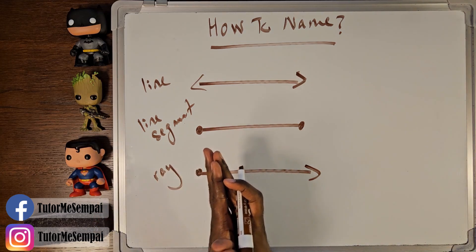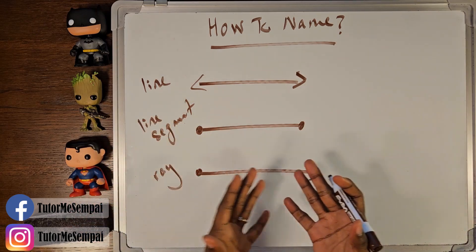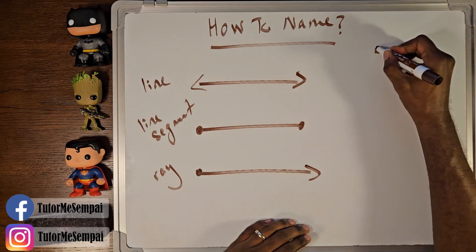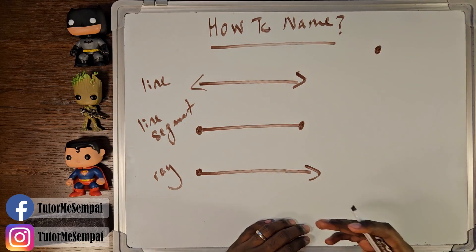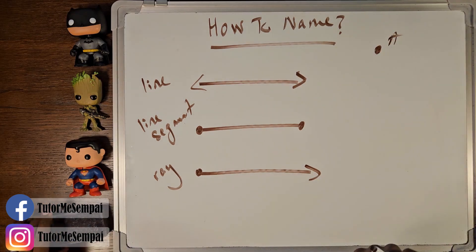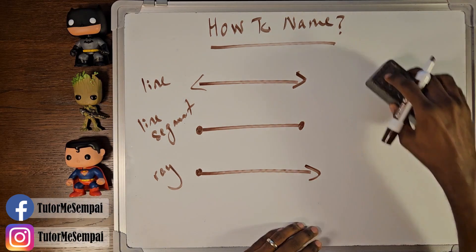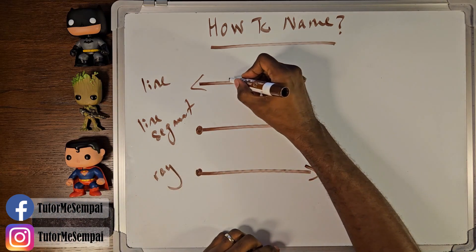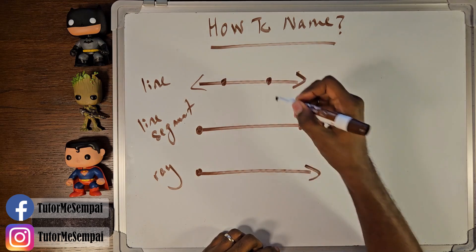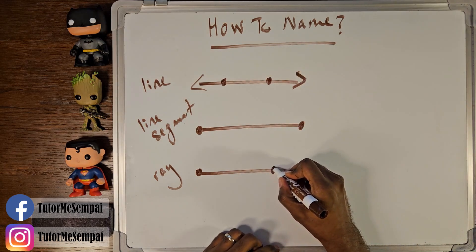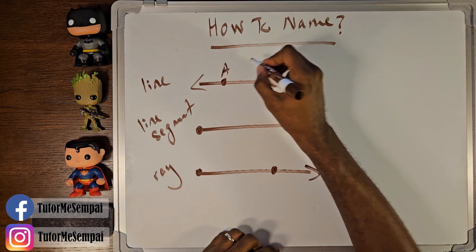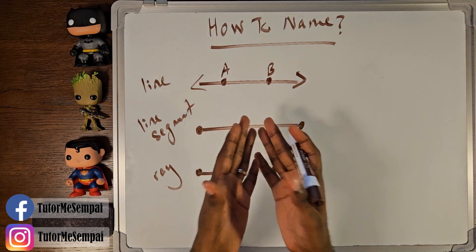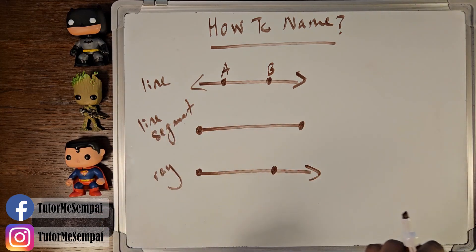However, we didn't cover how to name these. If you had these on some homework, how would you refer to them? We talked about how to name a point — if you had a singular point out there, this would just be point A. You can have points on all of these. We even have two points for our line segment, but you can have two points, three points, four points on any of these. So let's say we had A and B — how would we refer to this line with those two points?